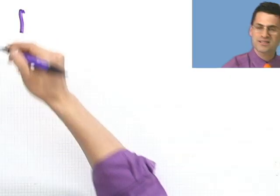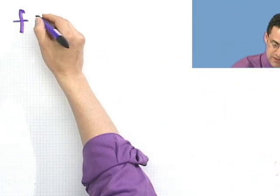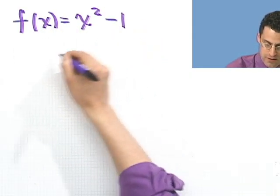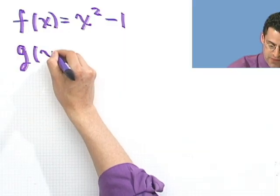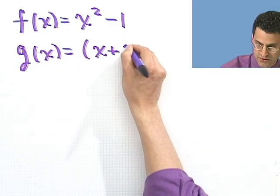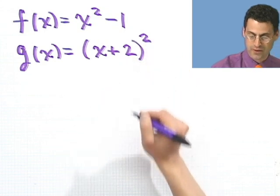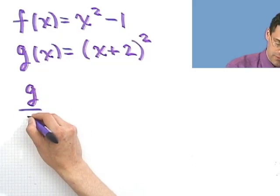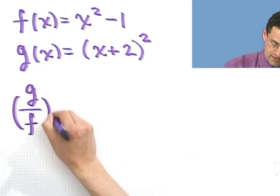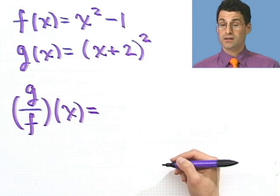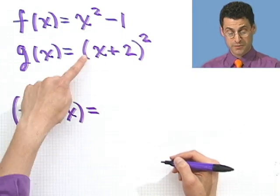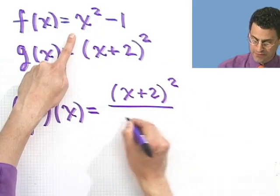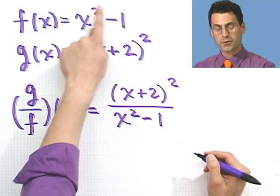Let's take a look at these two functions right here. How about x squared minus 1 for f and then g will be x plus 2 all squared. What happens, for example, if I were to divide these things? Let's say I were to look at g divided by f of x. What would that look like? Well, if I were to take the quotient, I have to put the g on the top now and I divide that by the f.